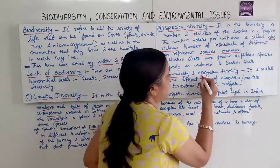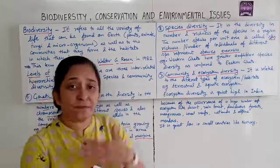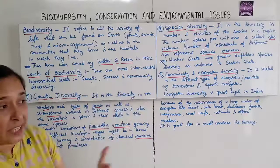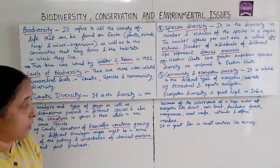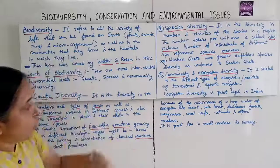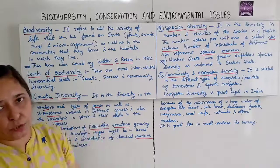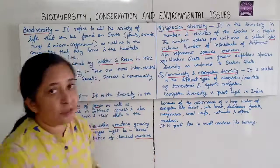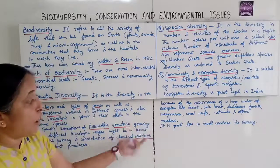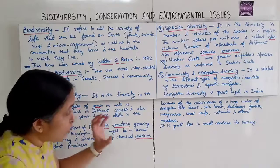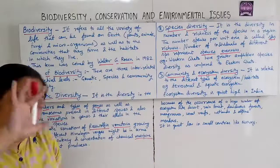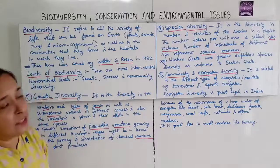Community and ecosystem diversity is related to the different types of ecosystems or habitats, such as terrestrial and aquatic ecosystems. Ecosystem diversity is very high in India due to the occurrence of a large number of ecosystems like desert, rainforest, deciduous forest, mangroves, coral reefs, wetlands, and alpine meadows. It is quite low in small countries like Norway.